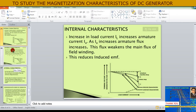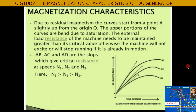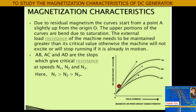The magnetization characteristic is divided into three parts. The OA part: the curve does not start from the origin — it starts at point A, slightly above the origin, because some voltage is induced initially due to residual magnetism. Then the curve goes straight at constant speed, and the critical resistance is also shown on the graph.